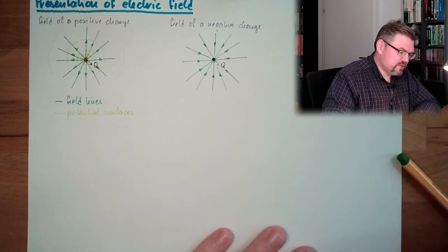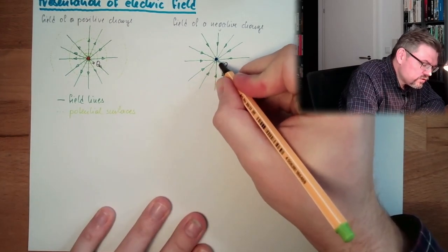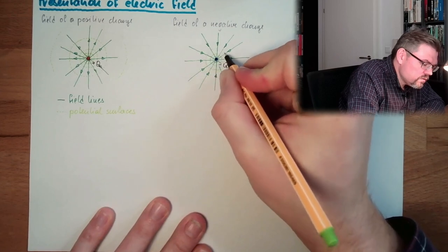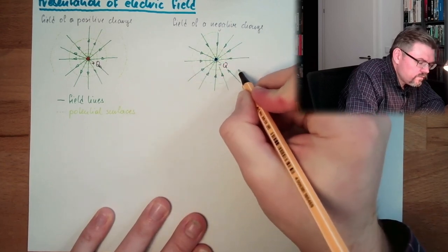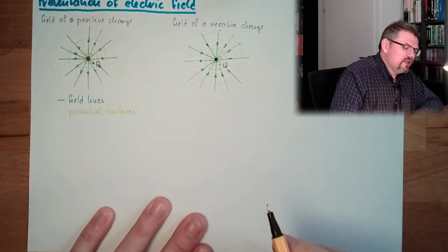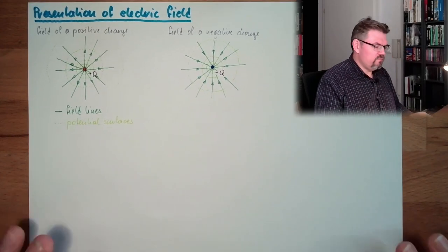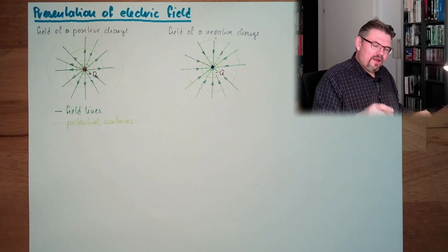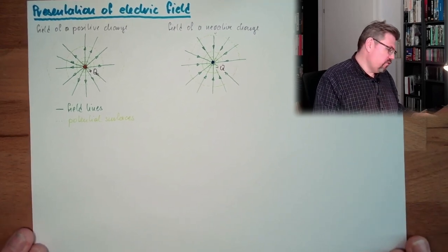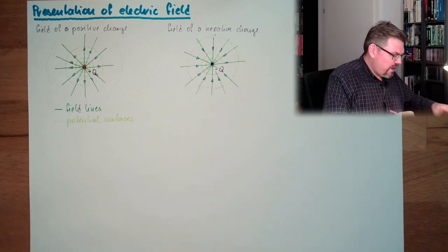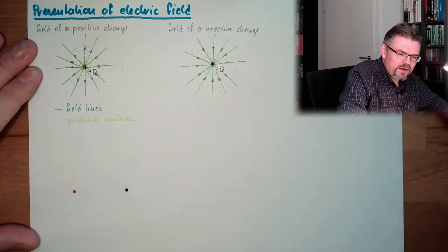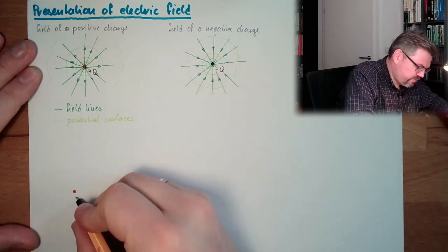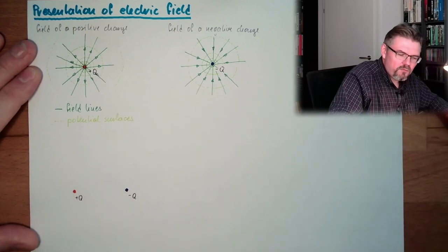The potential surfaces look pretty much the same. So here we have one potential surface, and also dropping with the square, of course. Now we have to talk about what is happening if we have two charges — a positive charge plus Q and a negative charge minus Q, the same amount but negative.